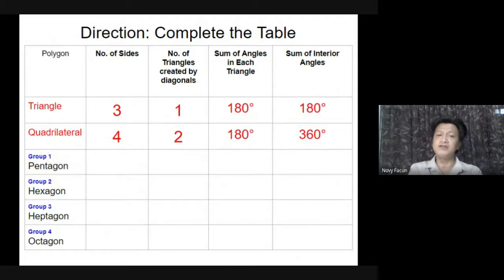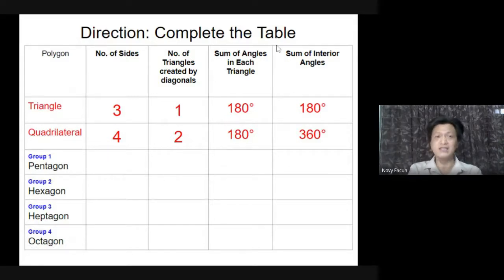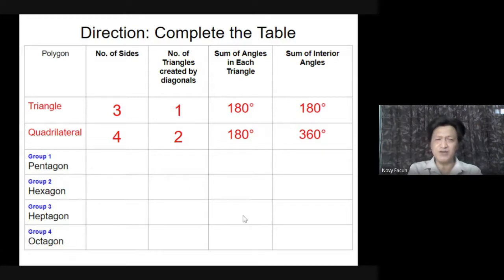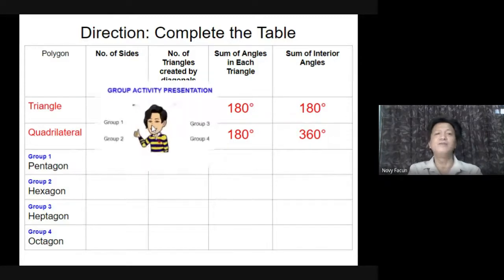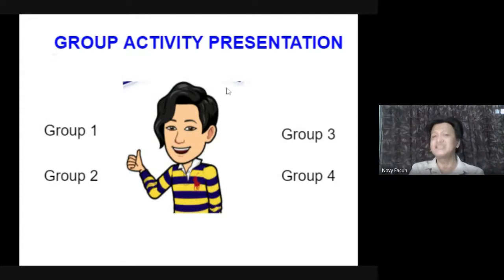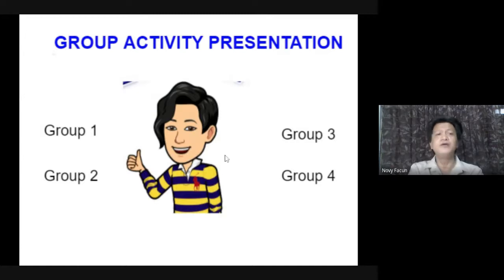After you draw the diagonals from the vertex, you're going to complete the table — the two examples have been done for you as a guide. For groups one, two, three, and four, you're going to fill up: the number of sides, number of triangles created by diagonals, sum of angles in each triangle, and sum of interior angles. Write your answer in the chat box. I will send the link in the chat box to enter the Google Slides platform. After that, you're going to present your output — the leader will be the one to discuss. Leader, ready, go.